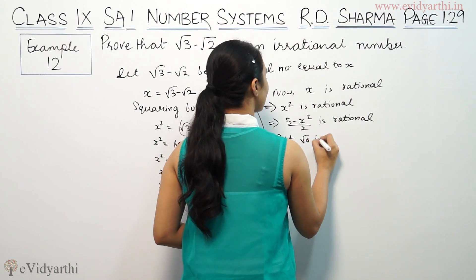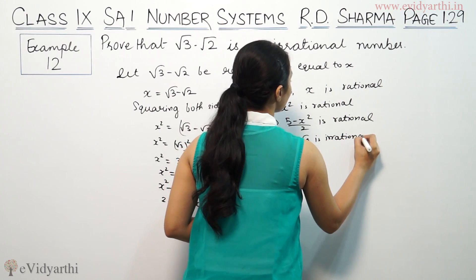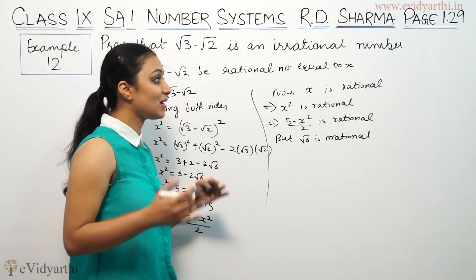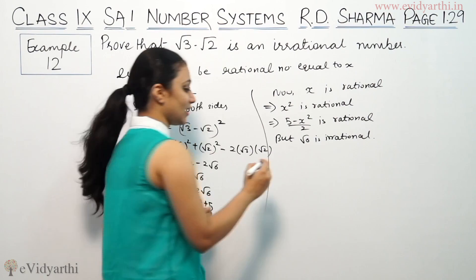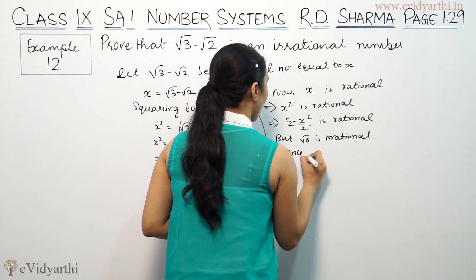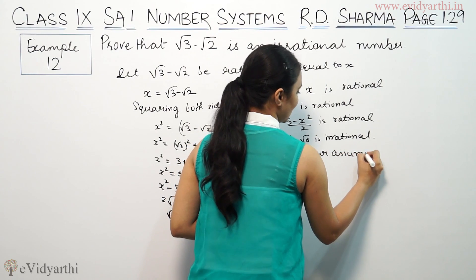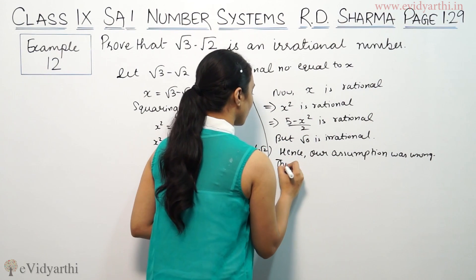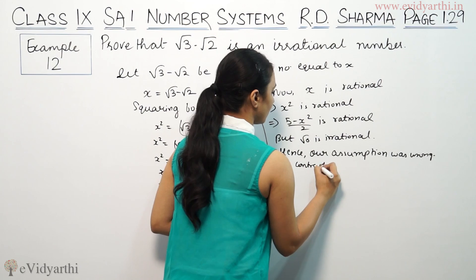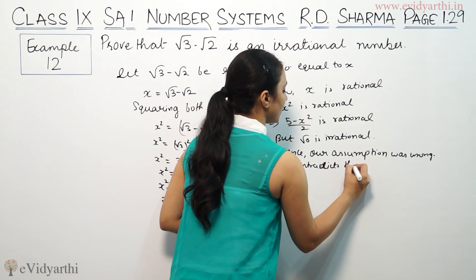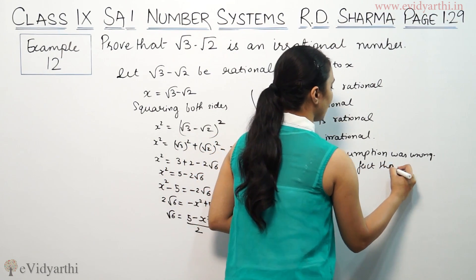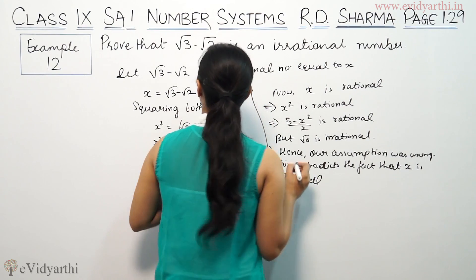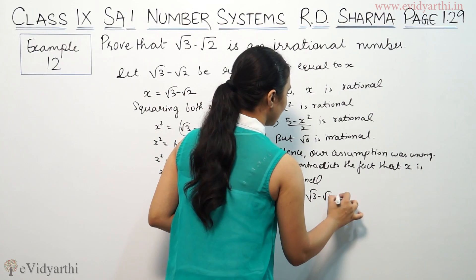But root 6 is irrational. This contradicts the fact that x is rational. Therefore, our assumption is wrong. Hence root 3 minus root 2 is irrational.